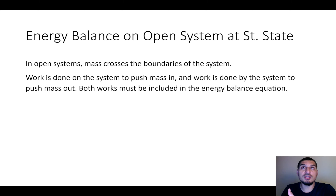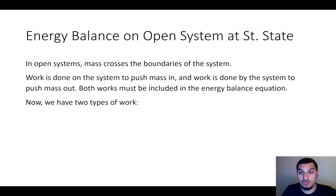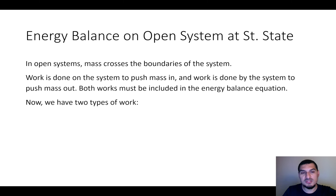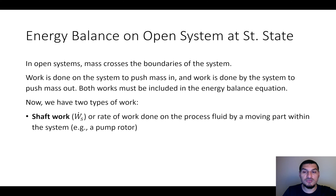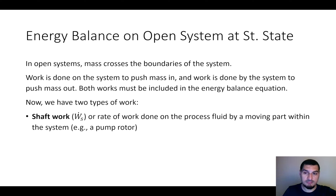How the energy of the flow going in and out will affect the energy equation that we are going to use. So we have two types of work. In the case of a closed system, there is only one type of work, which was the shaft work — the piston, the mechanical work. Here we have one more type. The first is the shaft work, which is the work done on the process fluid by moving parts, like the pump rotor or the shaft. This is possible in both open and closed systems.